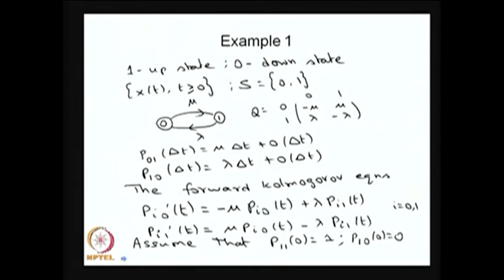The time the system spends in state 1 before moving to state 0 is exponentially distributed with parameter lambda. Once the system has failed — that is, the system is in the down state — the repair time is exponentially distributed with parameter mu. Once the repair is over, the system returns to the operational up state. So state 0 is the down state, state 1 is the up state; 1/mu is the mean repair time, and 1/lambda is the mean time to failure.